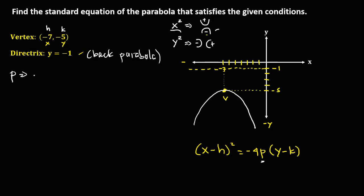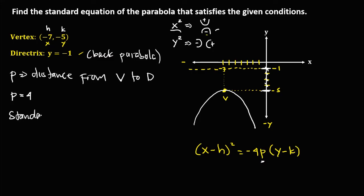Since p is the distance from the vertex to the directrix, we need to find that distance using the counting method. Starting counting on the next point from the vertex, we count 1, 2, 3, 4. Therefore p is equal to 4.